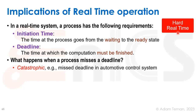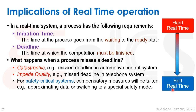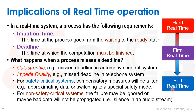Hard real-time systems must be developed very carefully. On the other side of the spectrum, soft real-time means we want to meet a deadline, but missing it only impedes quality — such as in a telephone system where you might miss a word or get lower audio quality. In safety-critical systems that miss a deadline, compensatory measures are needed, like approximating data or switching to a safety mode. For non-safety-critical systems, the failure could be ignored — for example, inserting silence in an audio stream. The middle area between hard and soft real-time is often called firm real-time.